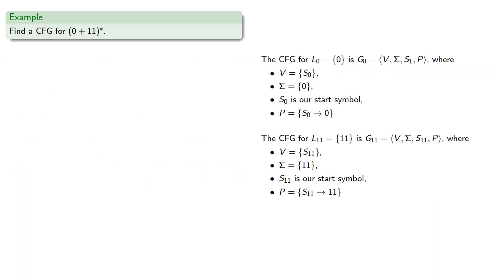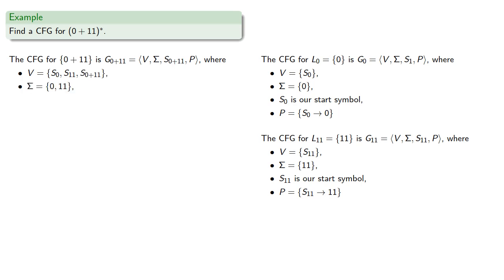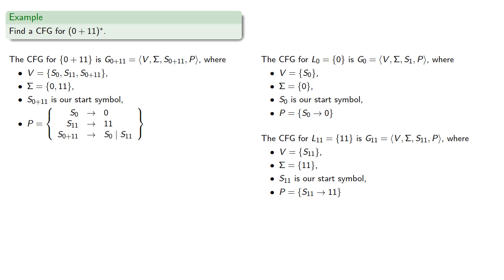We can find the context-free grammar for the union of the two languages, which will have variables consisting of the union of all our variables plus a new start symbol, terminal symbols as the union of our terminal symbols, our new start symbol, and the union of the rules together with a new production rule that takes our start symbol to one of the other start symbols.